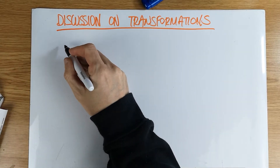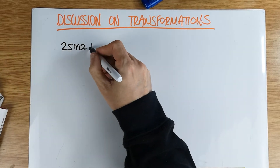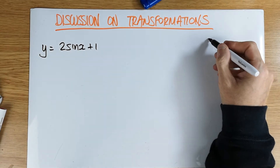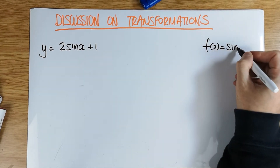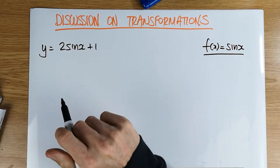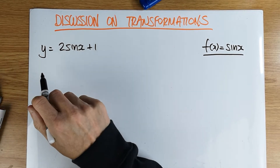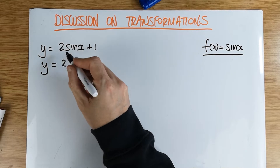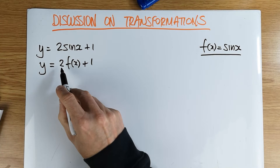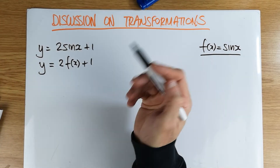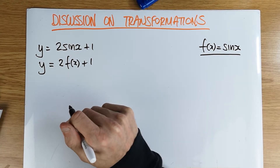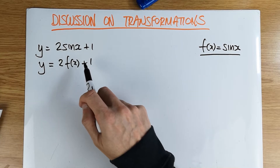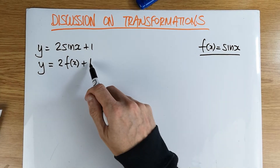Let's look at the graph of y = 2sin(x) + 1. If you write it in f notation, where f(x) is the sine of x, we can think of this as 2·f(x) + 1 — double your function and then add 1 to it. This represents a vertical stretch by scale factor of 2, followed by a translation upwards, parallel to the y-axis, by one unit.